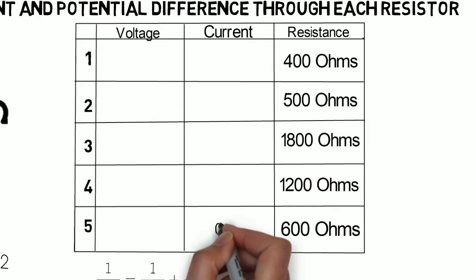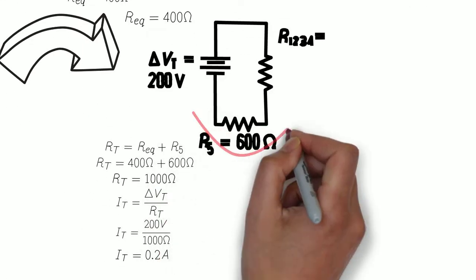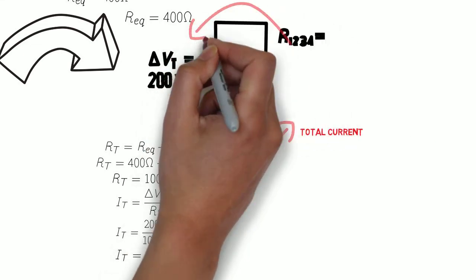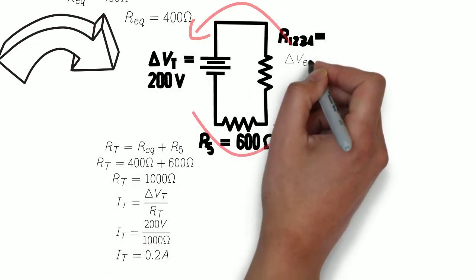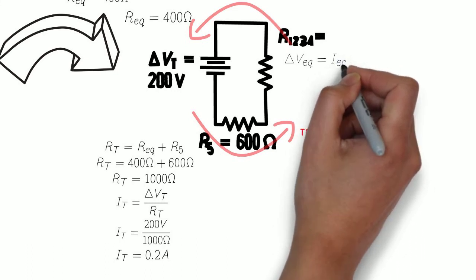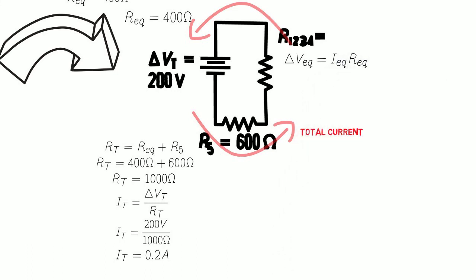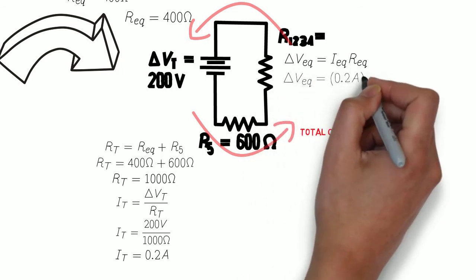Now, since we know the total current and since this is a series circuit, the current through a series circuit is the same through each resistor. So we know the current through R1234 and R5. So we can use Ohm's law to calculate the potential difference through our first resistor, which gives us a potential difference of 8 volts.